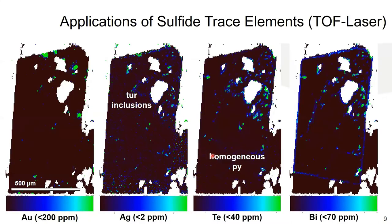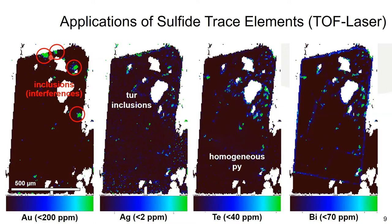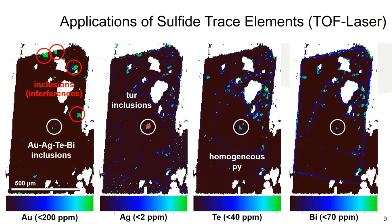Here is an example of our sulfide trace element maps acquired at UQAC in Chicoutimi on their brand new time-of-flight laser, a powerful instrument that acquires a large number of isotopes and analytes simultaneously. We're looking at gold, silver, tellurium, and bismuth in the exact same sulfide grain. One caveat: we always need to be careful with false-color concentration anomalies — some apparent anomalies don't exist upon checking reflected light images, likely representing analytical artifacts. However, in the homogeneous rim area, we see reasonable overlapping concentrations in silver, tellurium, bismuth, and gold, indicating a small polymetallic inclusion in this homogeneous rim area.